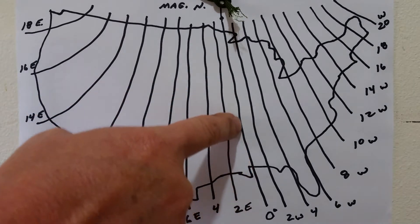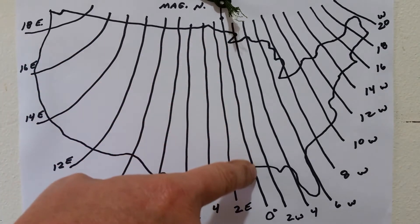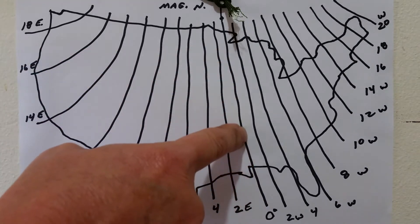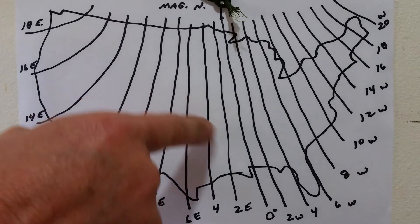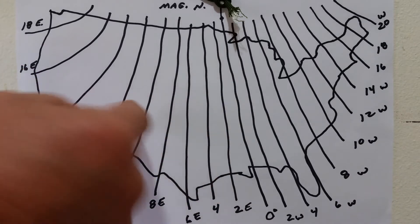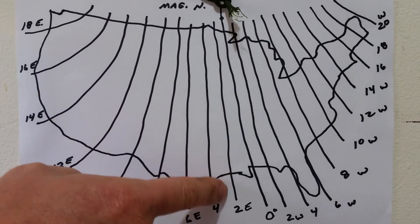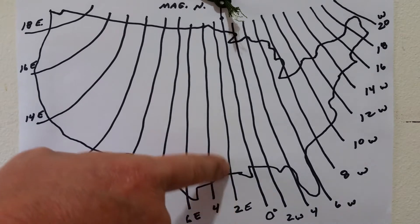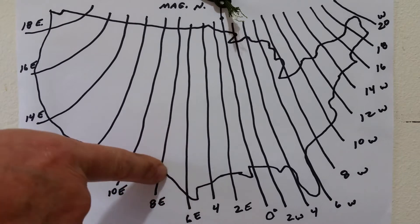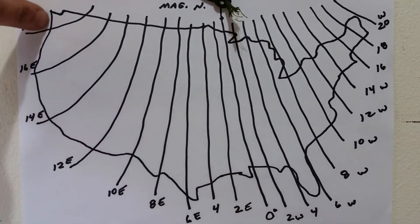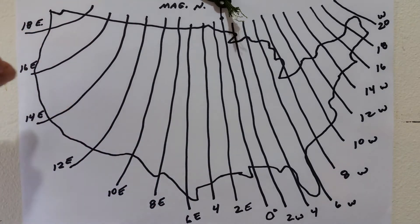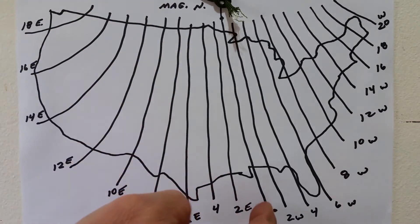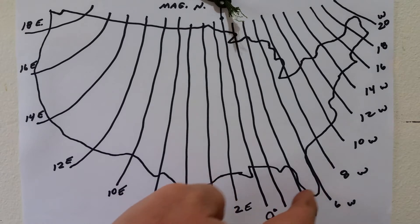That is true north, that is not magnetic north, that is true north. As we go west, we see these are easterly declinations: two degrees east, four degrees, six degrees, eight degrees, up to 18 degrees east. And they're called east because they're heading to the east.